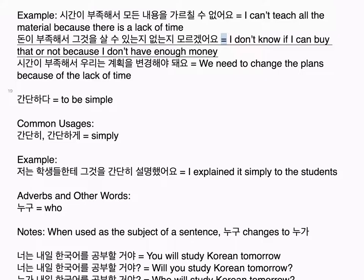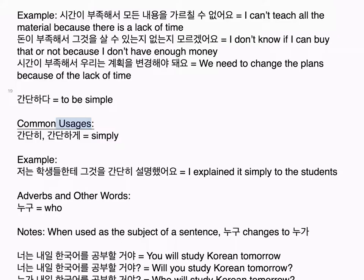Adjectives. 즐겁다 equals to be pleasant. The pronunciation is closer to 즐겁다. 즐겁다 follows the ㅂ irregular. Common usages: 즐겁게 — pleasantly. Example: 날씨가 좋아서 산책하는 것은 즐거워요 — it is pleasant to go for a walk because the weather is so nice.